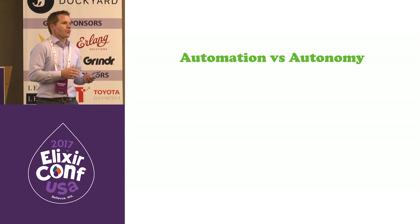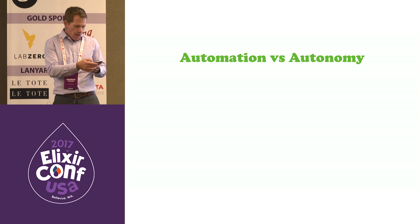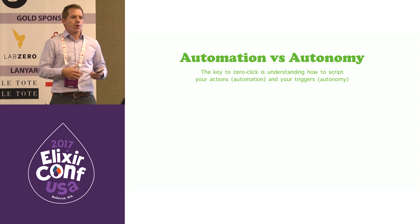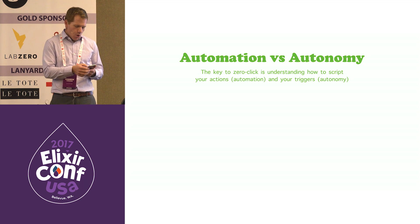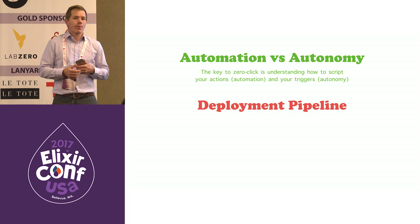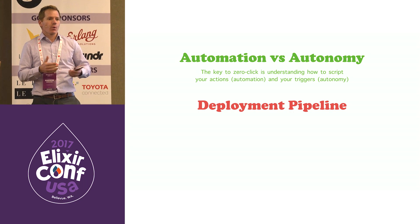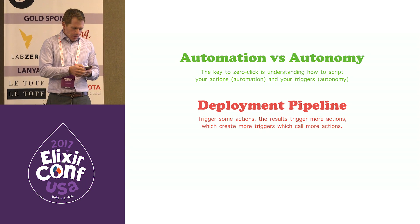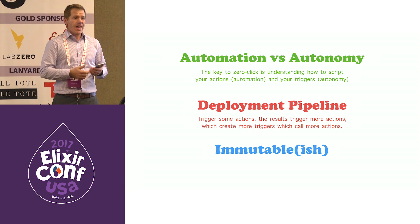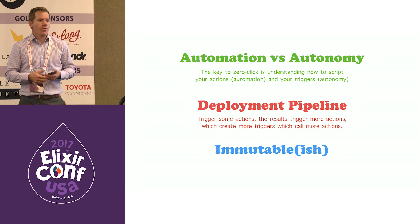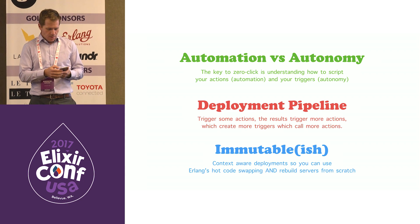There are three main areas I want to talk about today. The first is the idea of automation versus autonomy and how we can get zero-click deploys — these autonomous things working for us so we can focus more on code. The next is the deployment pipeline, looking at what a pipeline is and how to work it into your projects. And the last is immutable infrastructure: how you can bring up and tear down infrastructure on the fly, even if you're just a one-person Elixir team.